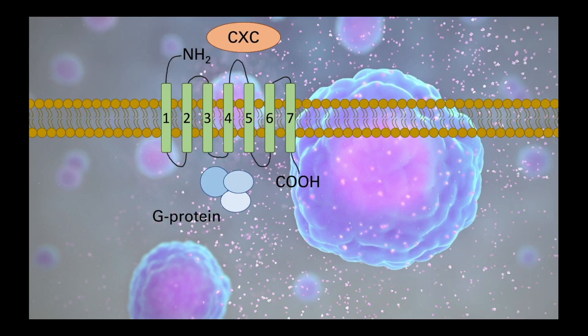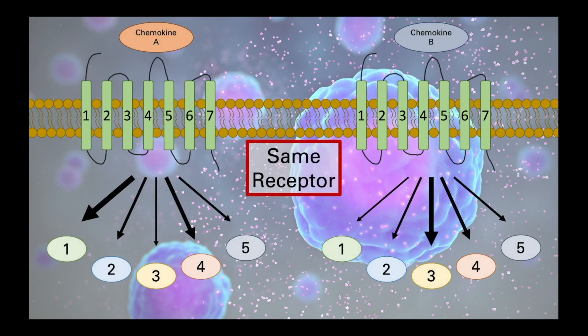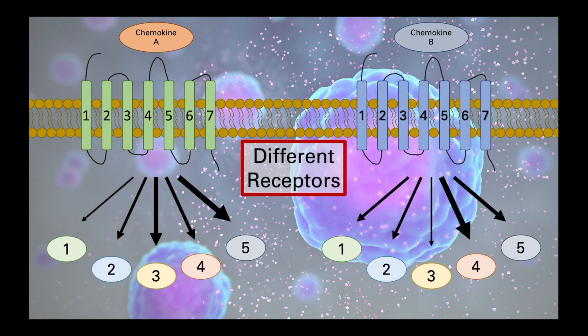Chemokines, on the other hand, are slightly different. This subfamily of cytokines signals via seven transmembrane G-protein coupled receptors. As with cytokines, there is pleiotrophy and redundancy within chemokines. For example, if chemokine A and B can both bind to the same receptor, they may have different downstream effects — chemokine A is primarily causing effects 1 and 4, while chemokine B mainly causes effects 3 and a little of effect 4. In addition, those same two chemokines may be able to interact with entirely different receptors, consequently having very different downstream effects.